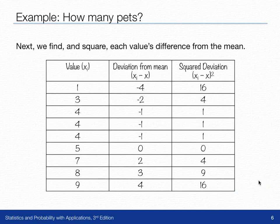Then we're going to add those squared deviations to obtain 52. We're going to use this 52 in the calculation of the standard deviation.